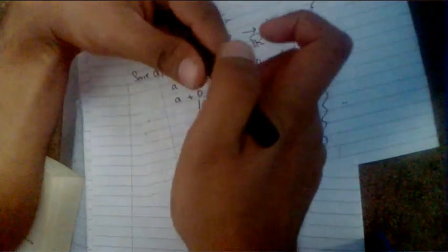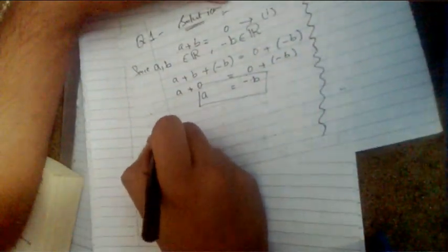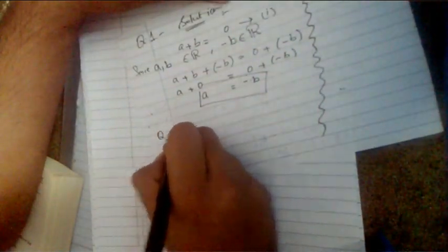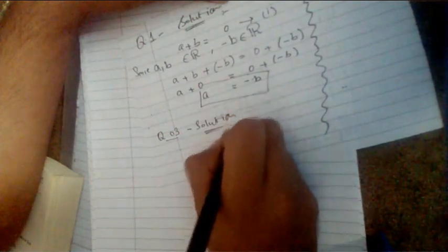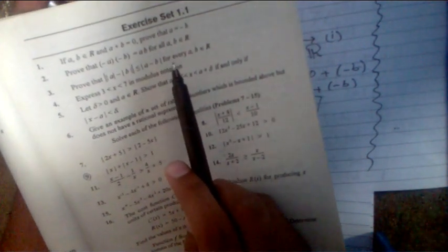Question number two is quite similar and not very important from a paper point of view, so we will move directly to question number three. In question number three, you are asked to prove that the absolute value of |a| minus |b| is less than or equal to the absolute value of a minus b, where a and b are both in the set of real numbers.